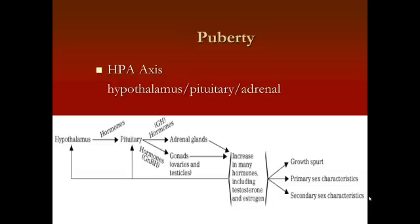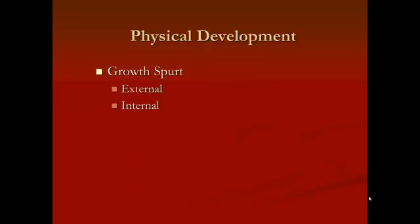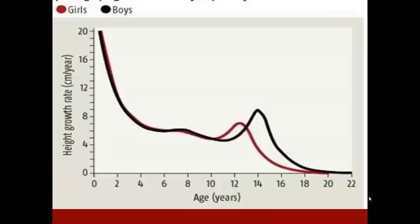Primary sex characteristics are changes that happen to actual reproductive organs. Secondary sex characteristics are changes that happen in the rest of the body. There is an external growth spurt — people get taller — but also an internal growth spurt. Boys and girls go through this growth spurt at slightly different times because girls generally go through puberty earlier than boys.